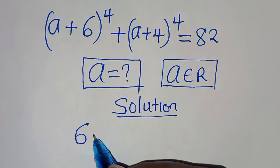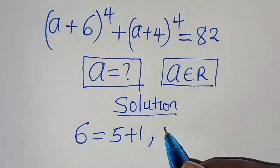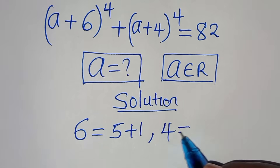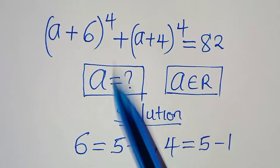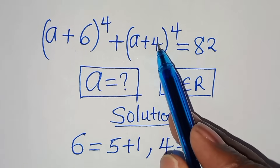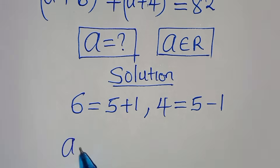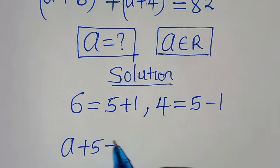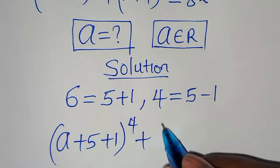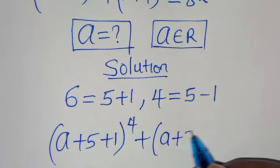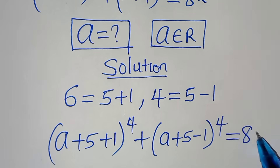We notice that 6 is the same as 5 plus 1, and 4 is the same as 5 minus 1. So we substitute: 6 becomes 5 plus 1, and 4 becomes 5 minus 1, giving us (a + 5 + 1) to the power of 4 plus (a + 5 − 1) to the power of 4, equal to 82.